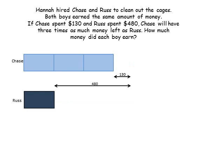Let's take out the money that was spent. $480, which was the money Russ spent, minus $130, which was the money Chase spent — so $480 minus $130 — is basically equal to those two boxes on top. It's equal to two boxes. So $480 minus $130 is $350, and that equals two boxes. Therefore, one box equals $175.